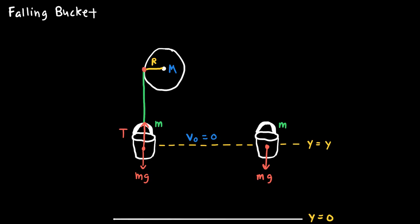By consequence, there's that same tension force which pulls down at the contact point between the pulley and the rope. The pulley itself has some weight, so there must be a downward gravitational force on it. Since the pulley is a fixed object, there must be something holding it up — a metal rod through its center connected to a wall or clamp — which exerts an upward normal force on the pulley.